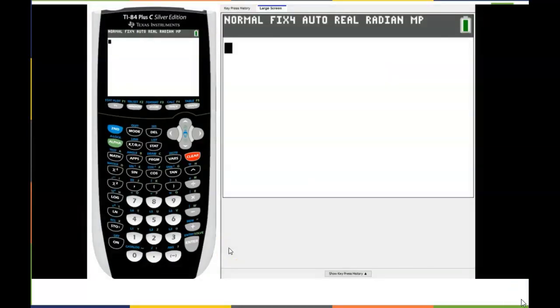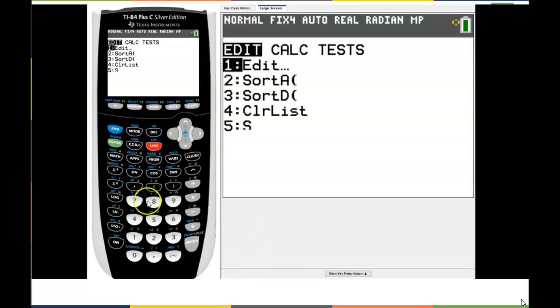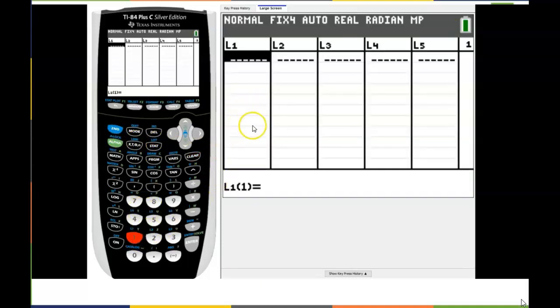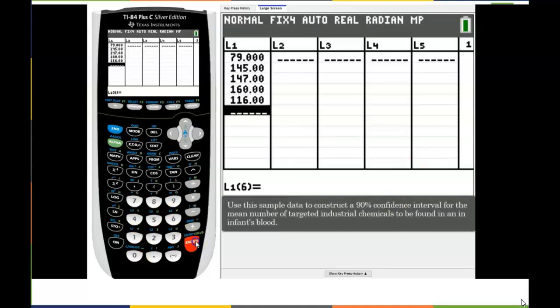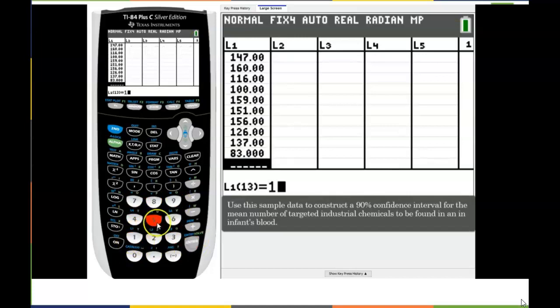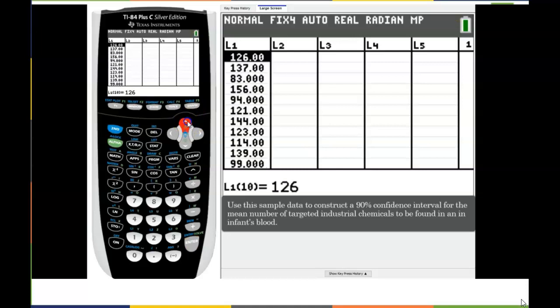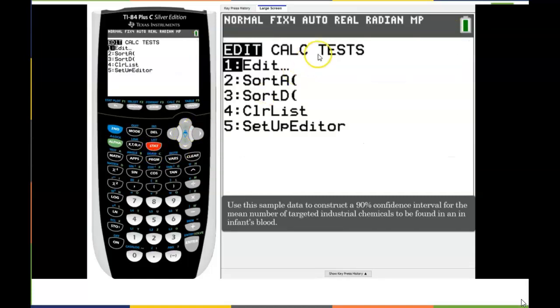Using the TI-84 plus to construct a confidence interval for T distribution is pretty straightforward. I'm going to plug in some data into a list. I'm going to go to stat, edit my list, and in list one, I'm going to put all of my data. Now that my data is in my list, I just want to double check to make sure that I have all my values, and it looks like I have all 20 of them.